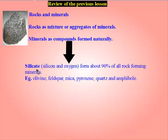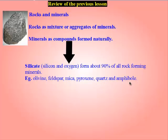We stated that silicate minerals form about 90% of all rock-forming minerals, and silicate is formed from the elements silicon and oxygen. Some examples of silicate minerals include olivine, feldspar, mica, pyroxene, quartz, and amphibole.